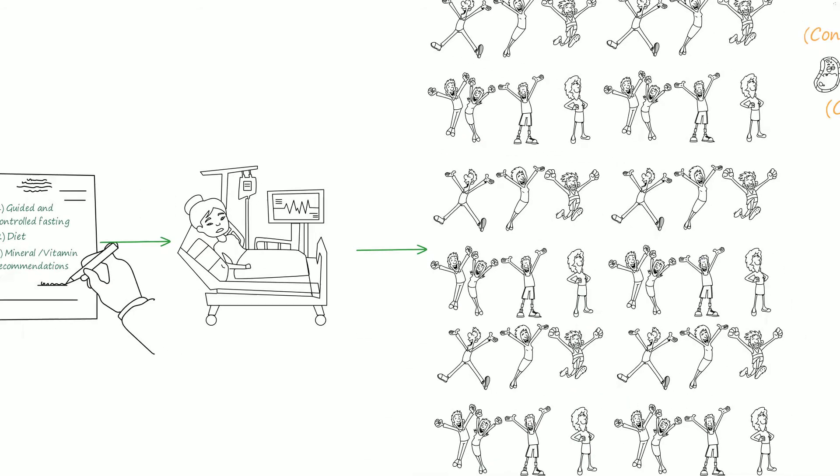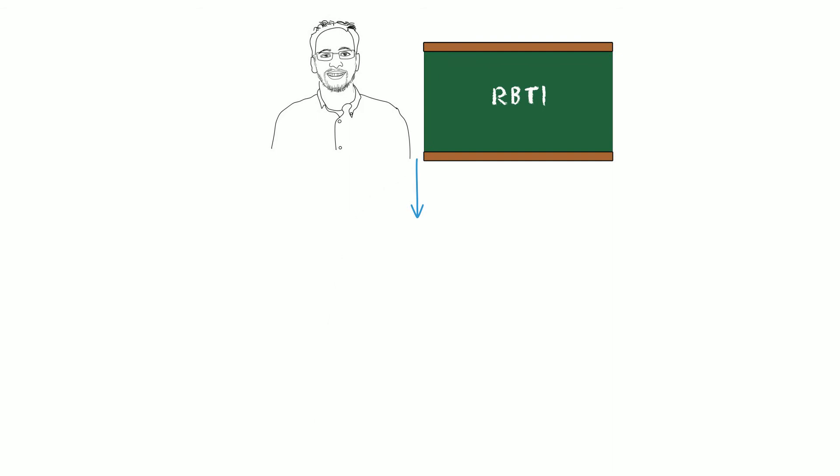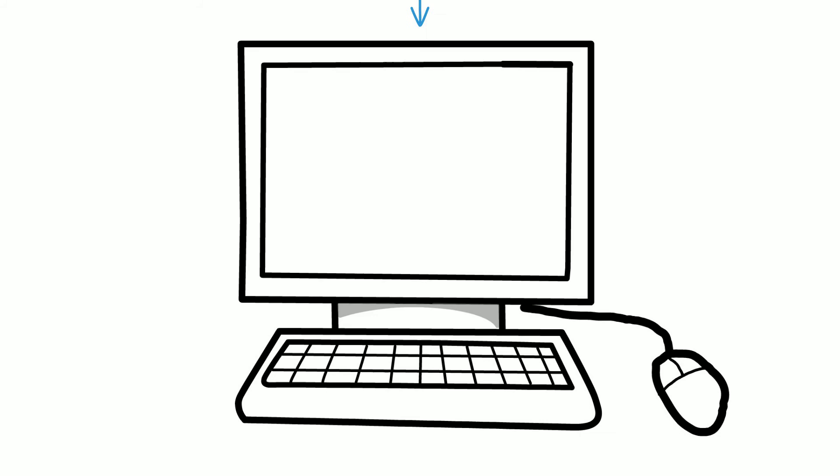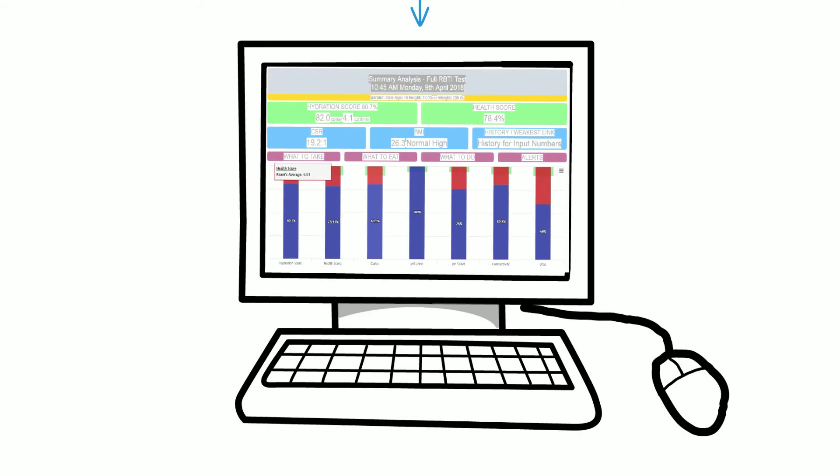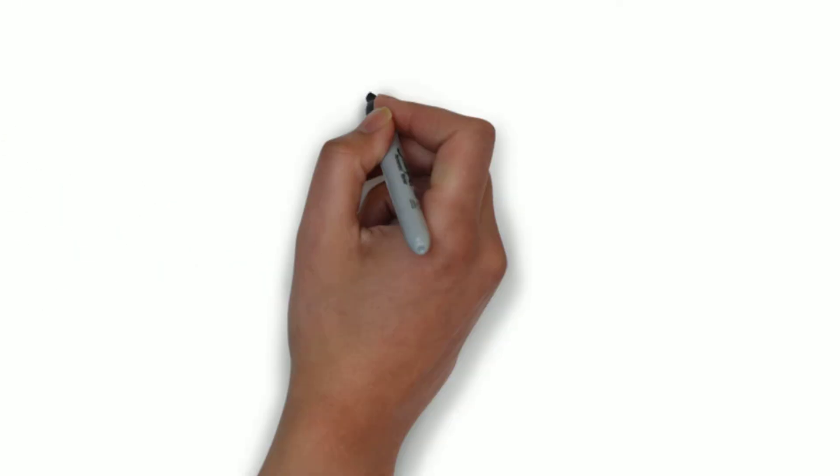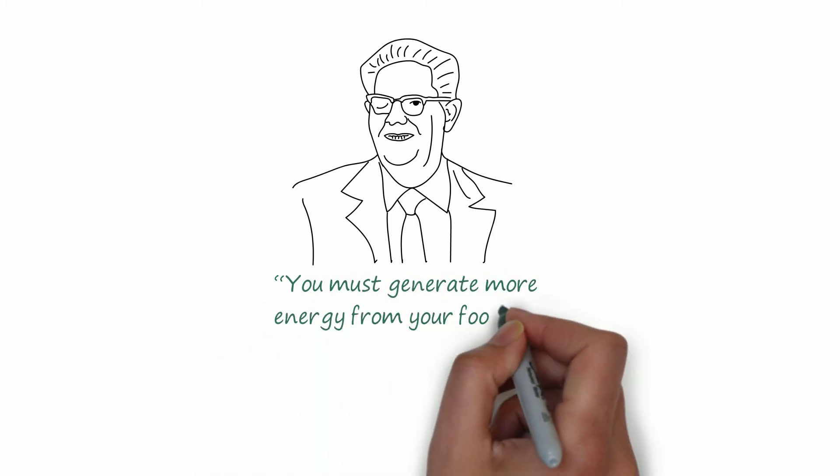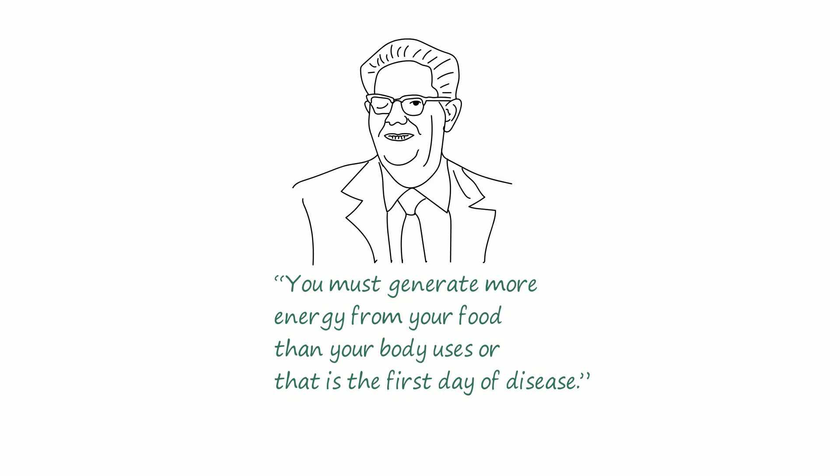Reims' biological theory of ionization, or again, RBTI, provides a way for you and anybody you know to learn and monitor your health in support of your God-given ability to heal. You must generate more energy from your food than your body uses, or that is the first day of disease, Dr. Reims would say.